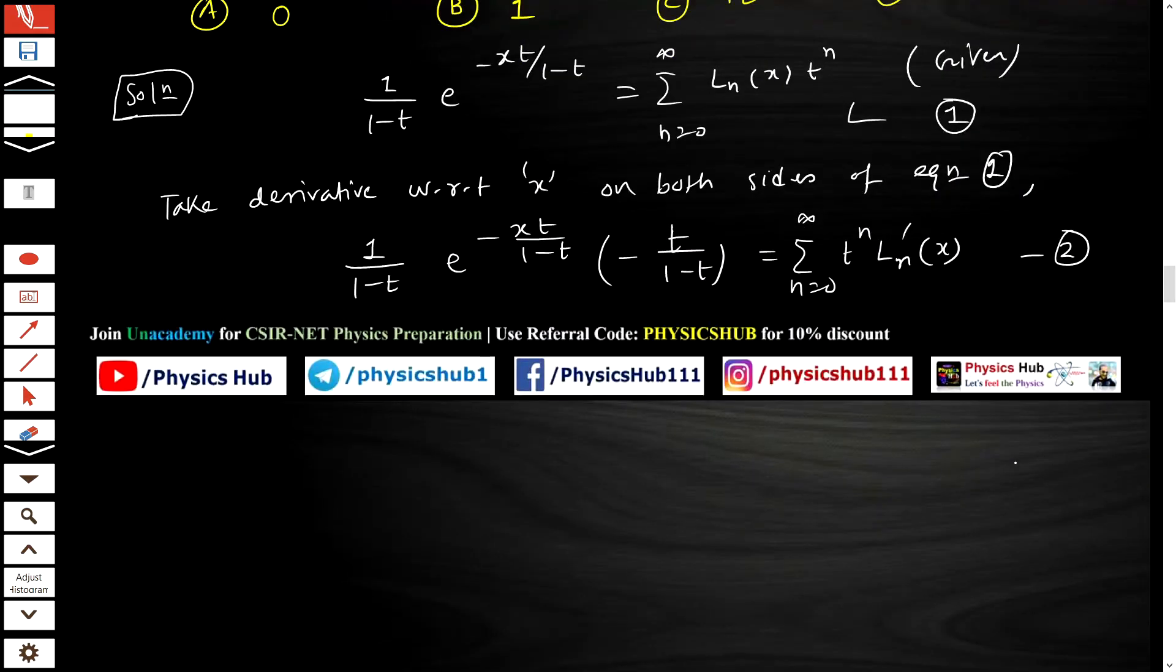Now once this is done, you have to find out ln'(0), which means you have to put the value of x to be 0. So put x equal to 0.